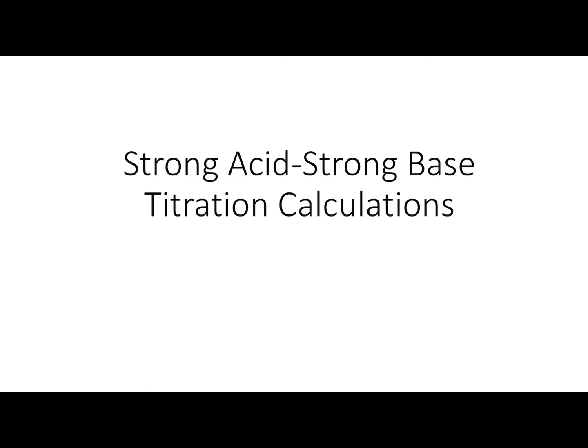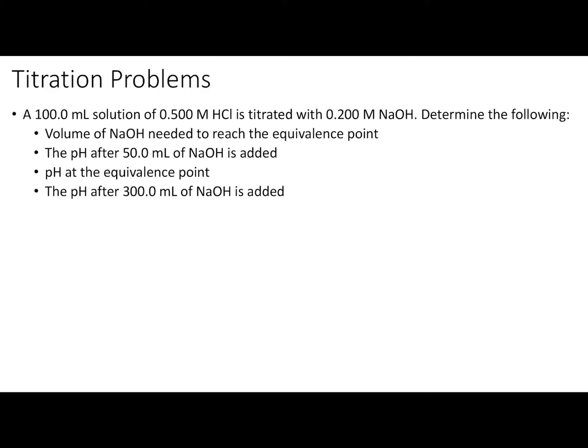Hello everybody. The purpose of our video today is to talk about calculations associated with strong acid-strong base titrations. Specifically, the titration in question is the titration of a 100 mL solution of 0.500 molar hydrochloric acid with 0.200 molar NaOH. We are going to determine: first, the volume of NaOH needed to reach the equivalence point; second, the pH after 50 mL of NaOH is added; third, the pH at the equivalence point; and fourth, the pH after 300 mL of NaOH is added.